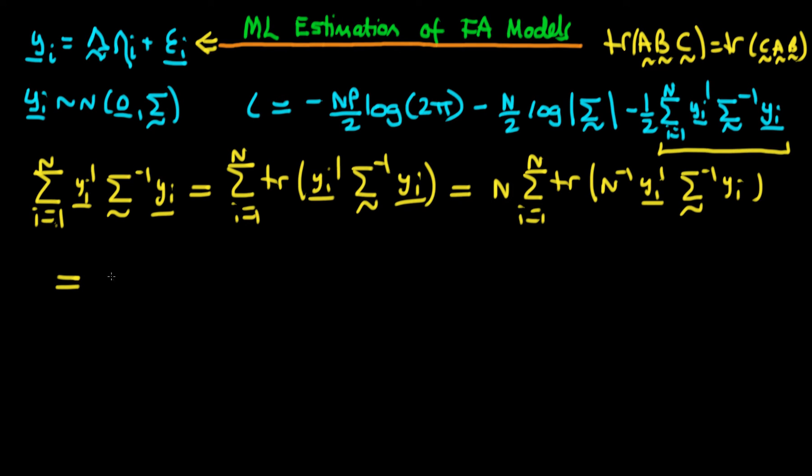So we can use this to rewrite this expression. Inside the parenthesis, we have n times the sum from i equals 1 to n of the trace of n times yi on its own times yi primed times sigma to the power minus 1. Essentially we've taken this yi here and put it out the front.